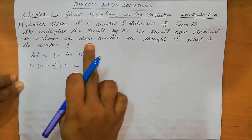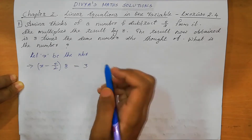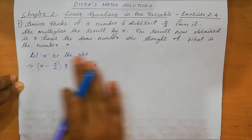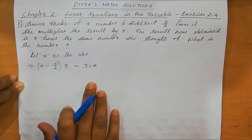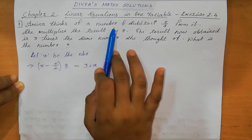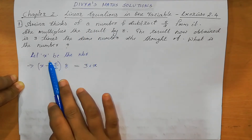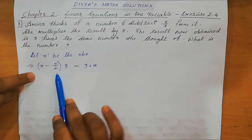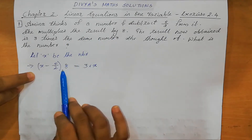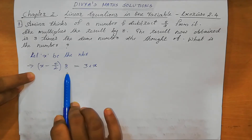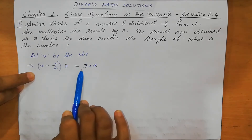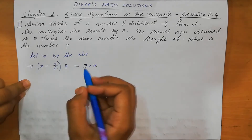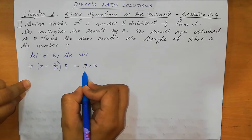3 times the same number she thought of. Which number she thought of? X. So 3 into X. First Amina thinks of a number — that one we take as X. Then subtract 5 by 2: X minus 5 by 2 is the result. Then she multiplied the result by 8: X minus 5 by 2 into 8 equal to 3X. This is the equation.